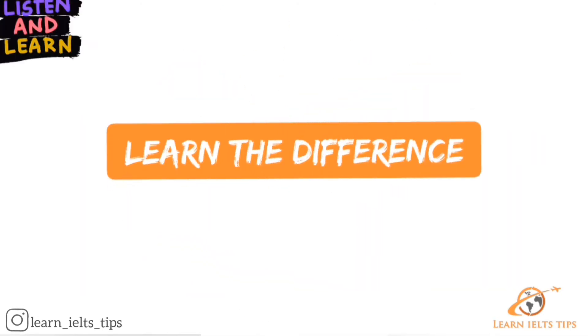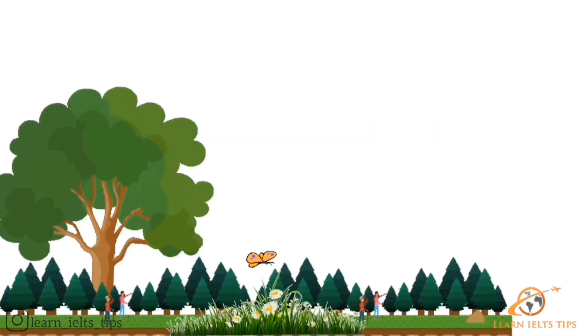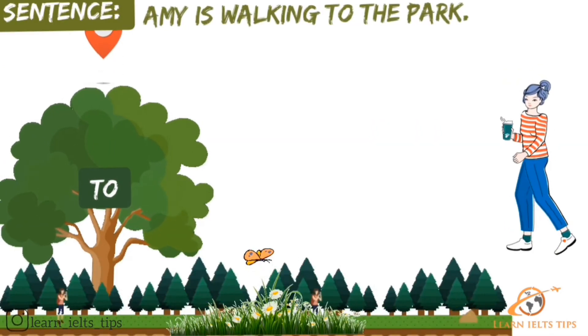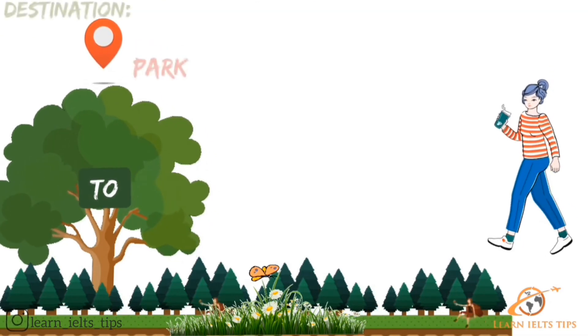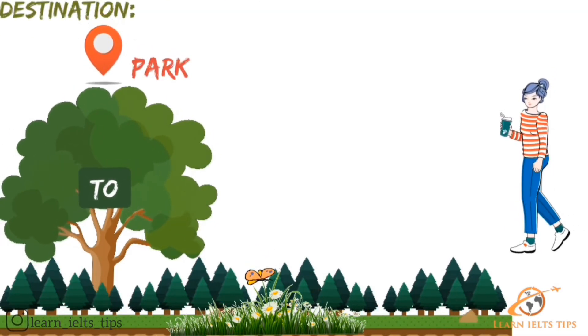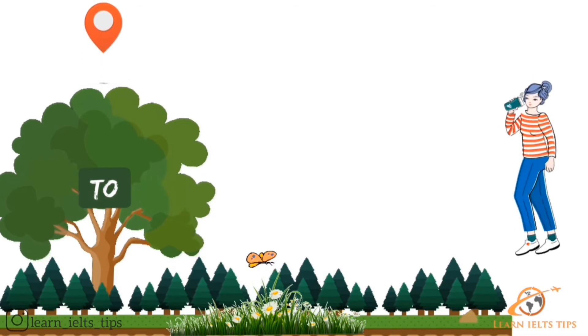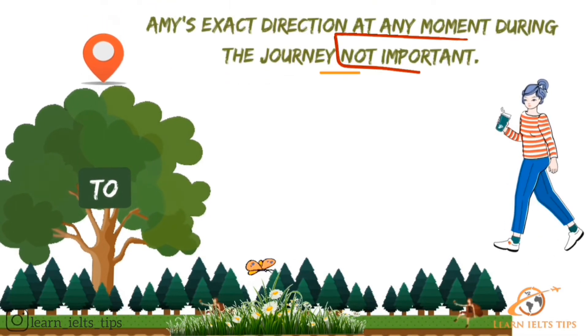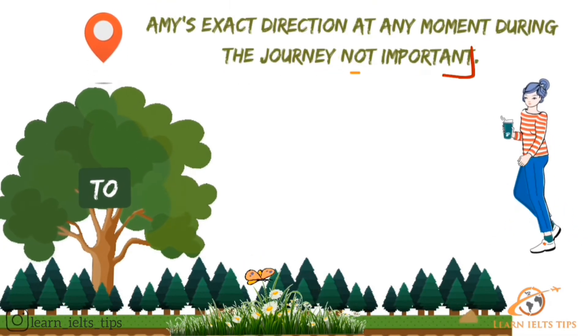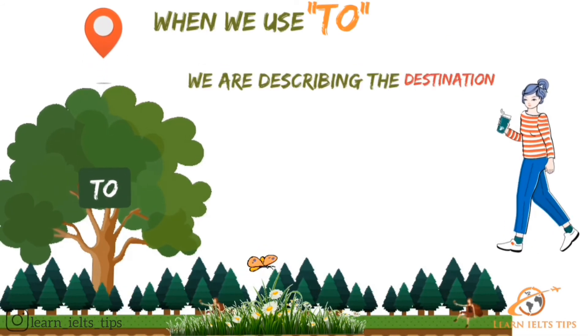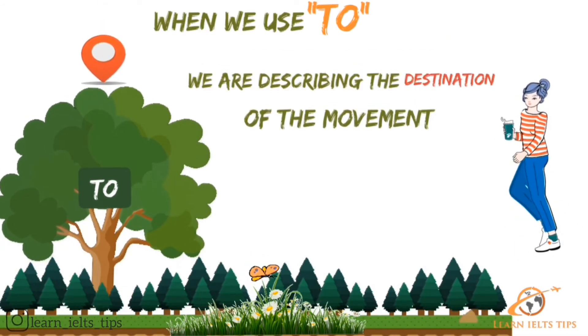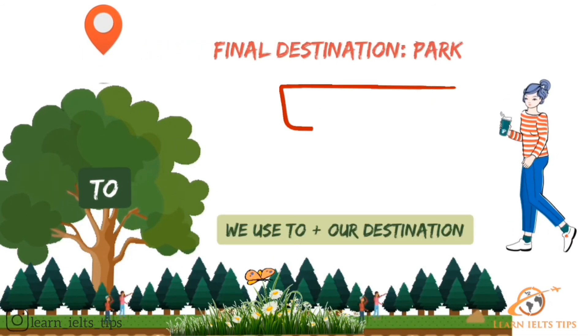In this lesson, you will learn the difference. Look at this sentence: Ami is walking to the park. To the park means that the destination of the journey is the park. Ami's exact direction at any moment during the journey is not important. When we use to, we are describing the destination of the movement. Only Ami's final destination is important.